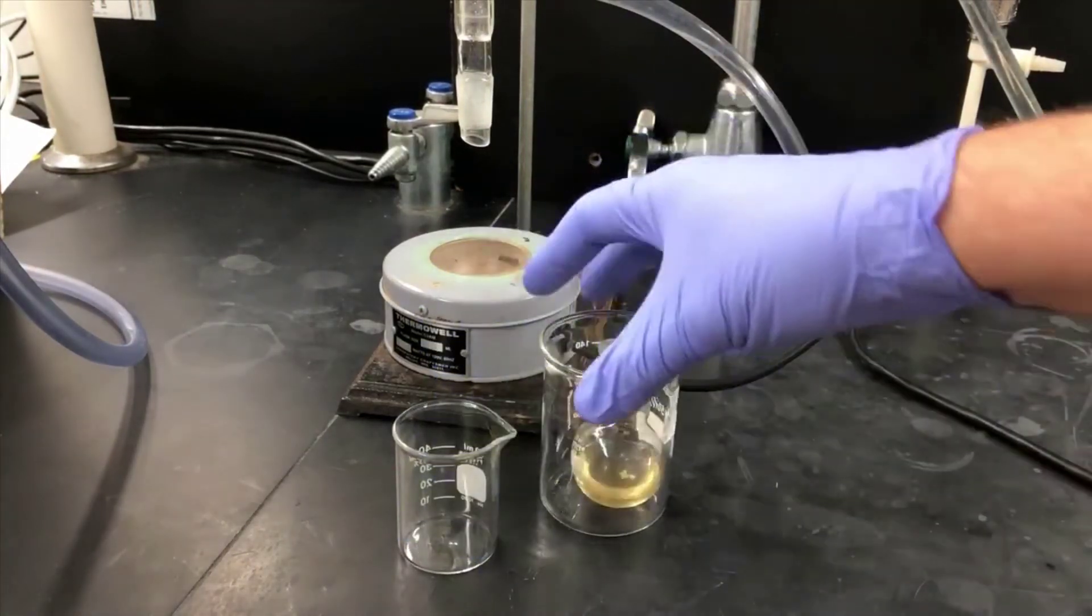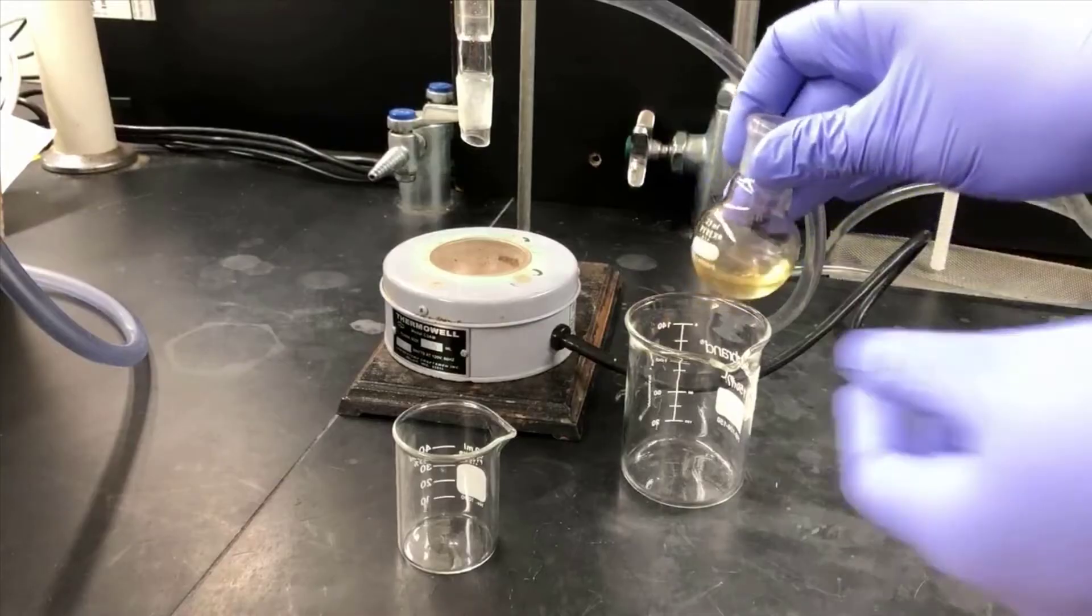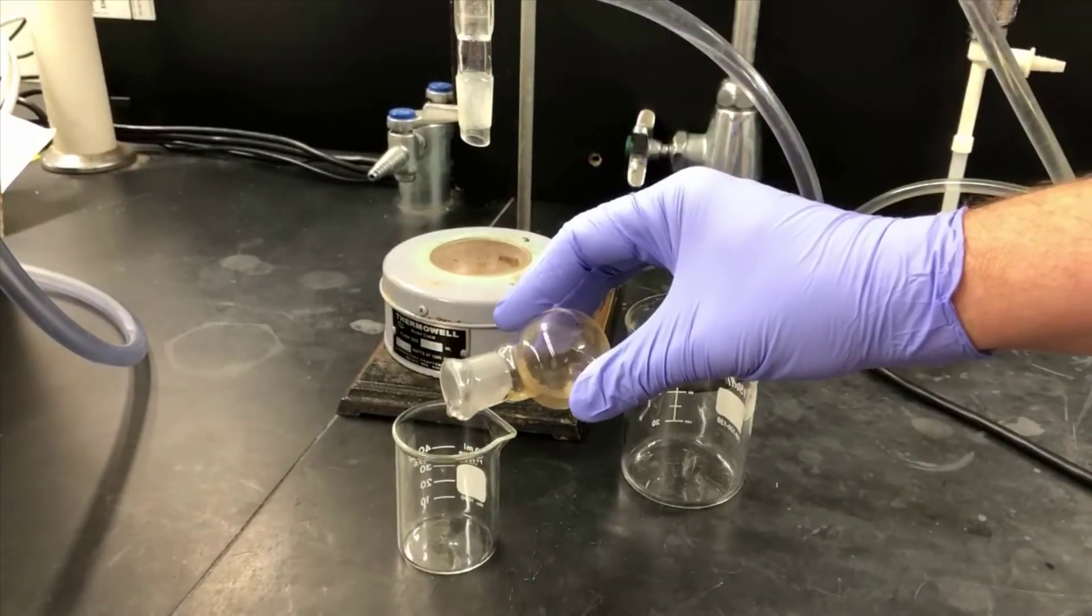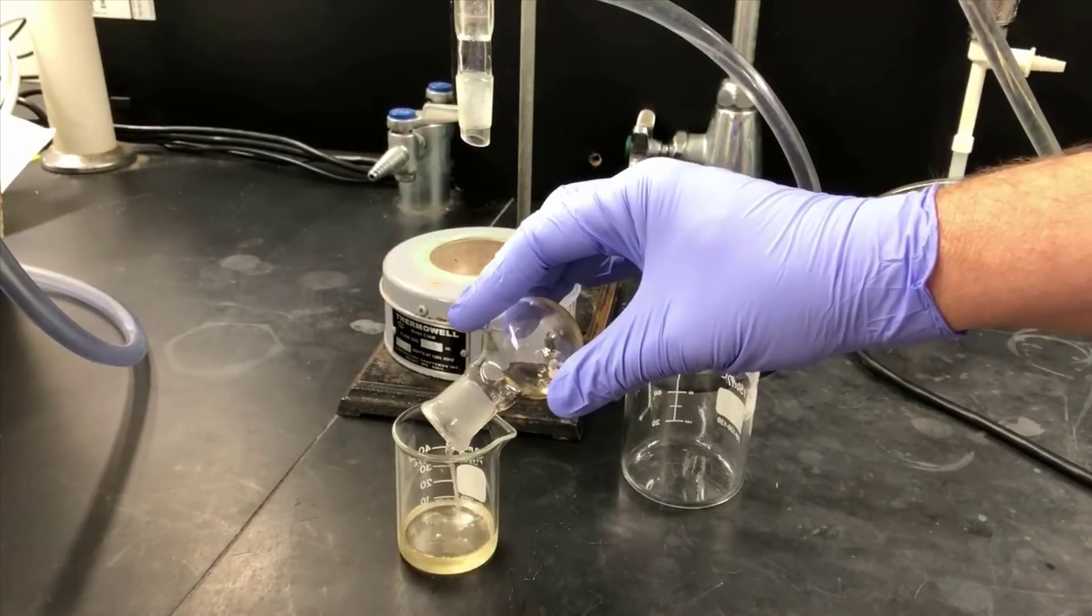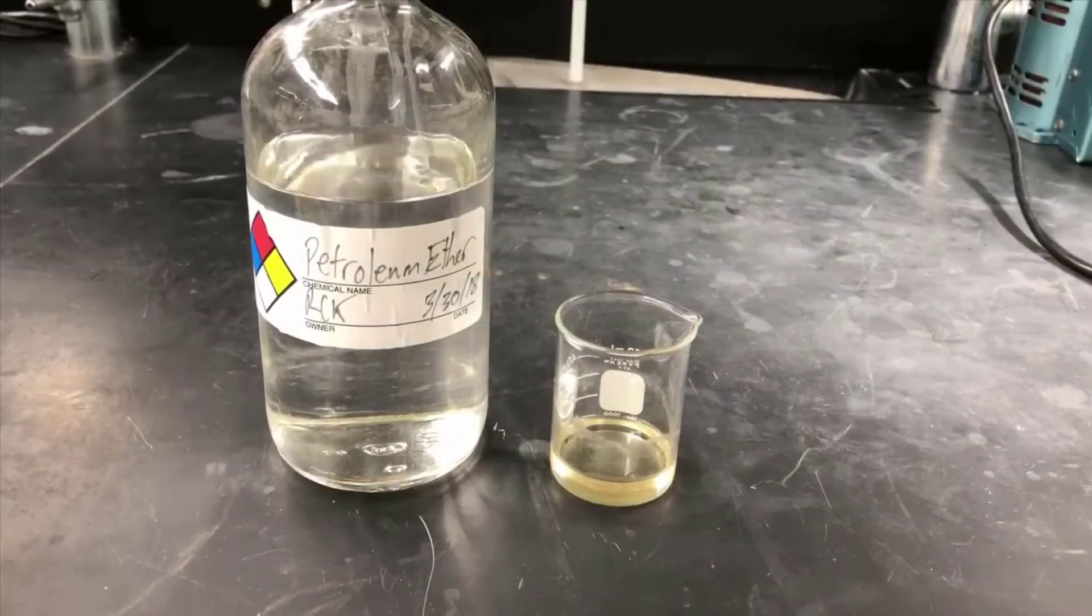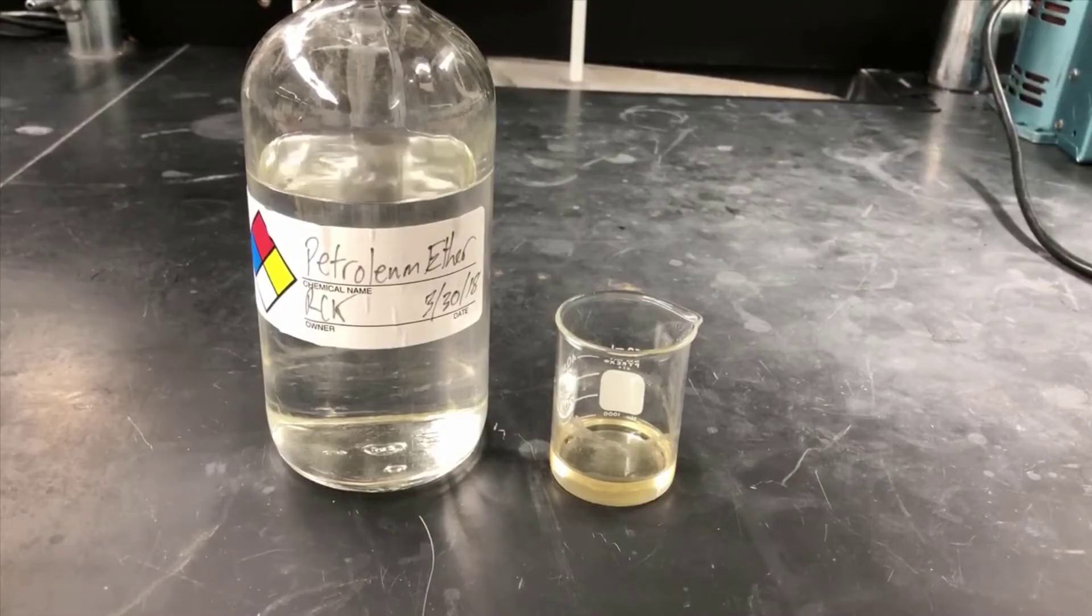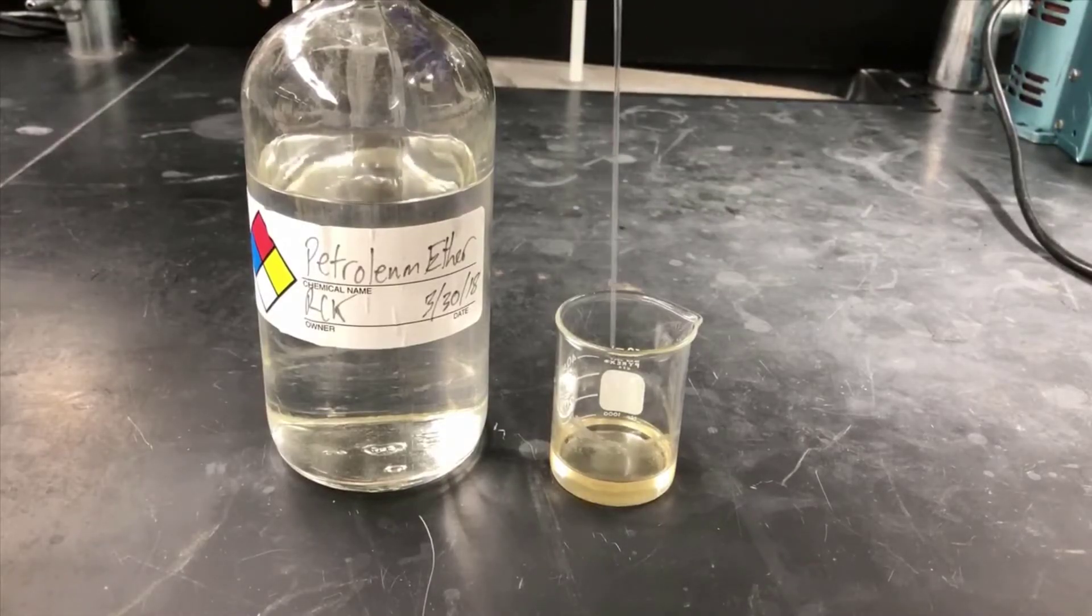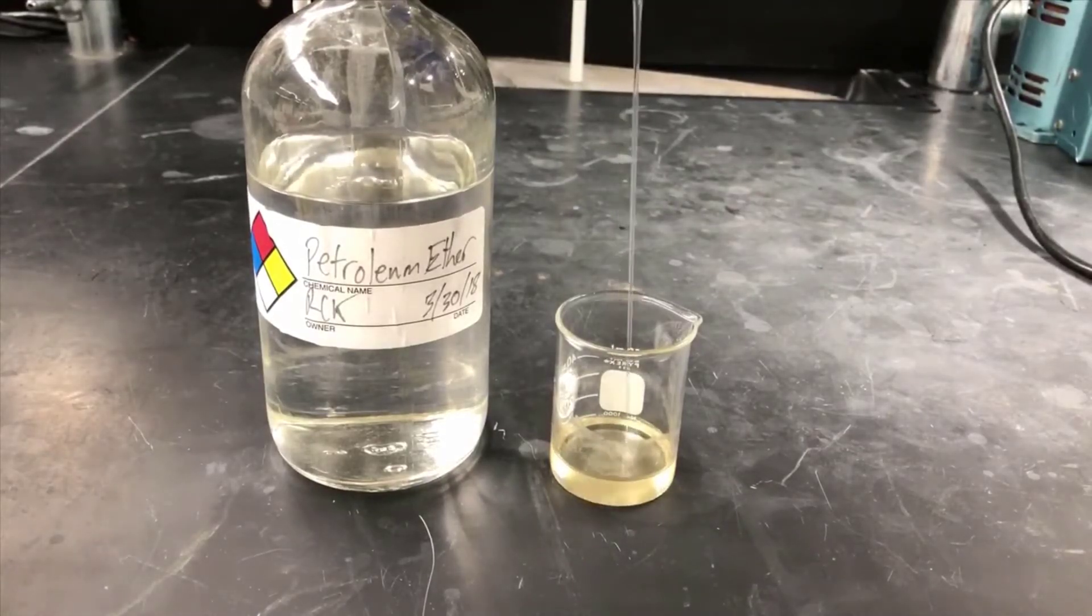Now I'm decanting the reaction solution out of the round bottom flask into a small beaker. Here I'm just pouring carefully to remove the solution, but leave the boiling chips behind in the flask. Now that I have the boiling chips removed, I'm going to add petroleum ether to crystallize the Diels Alder product and allow me to filter it.